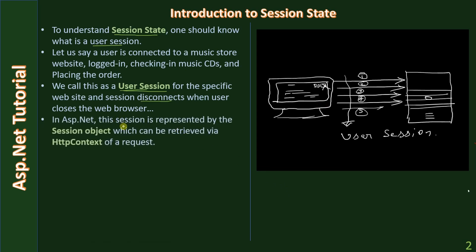In ASP.NET, this session is represented by the session object, which can be retrieved via the HTTP context of the request. When we are writing code on the web server, ASP.NET code runs there and we can get the session object from the HTTP context. Once the session object is retrieved, we can store session-related information in it.